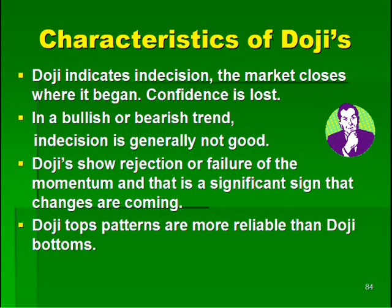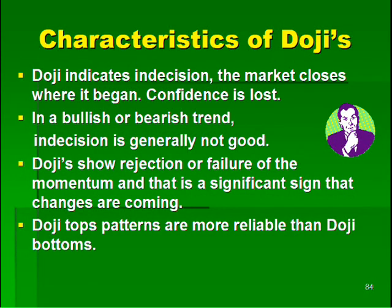Confidence is lost in an uptrend or downtrend when you see a doji. In a bullish uptrend, you want to see the market close above the open, close near the high, and see lots of green candles — that signifies a strongly intact uptrend. All of a sudden you start to see a doji, and that starts to show indecision. That's where you raise the caution flag. Dojis show rejection or failure of momentum. Doji top patterns are more reliable than doji bottoms, but personally I find the doji itself is the most reliable signal — it's the preceding candle that follows the doji that really gives you the clue.